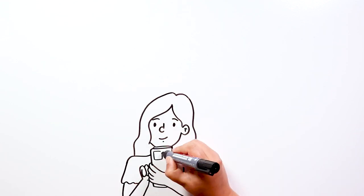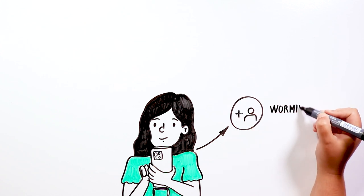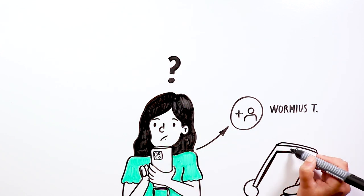Samantha was browsing her Instagram account when she received a new follow request. She didn't know the name, Wormy is T, so she got into the stranger's profile.